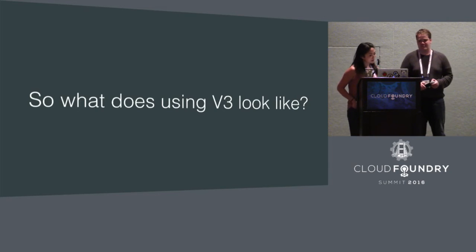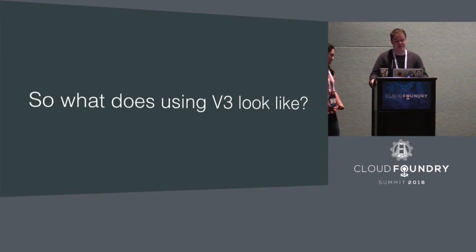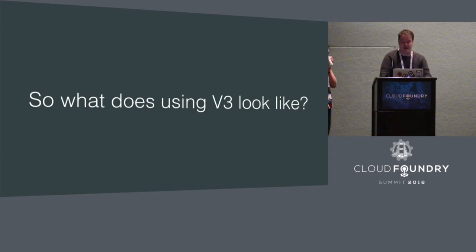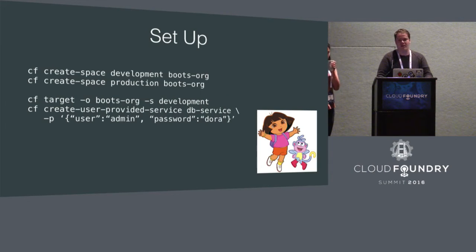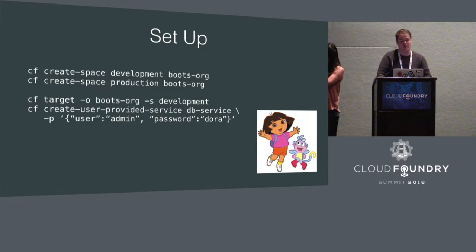So what does using V3 look like? The best way to understand that is to build a sample app. We're going to start by talking about building an app in V2 and how we can make it better. We'll use the CF CLI to create a space for development and a space for production. We'll target the development space, and we'll create a user-provided service that has a username and password for a database.